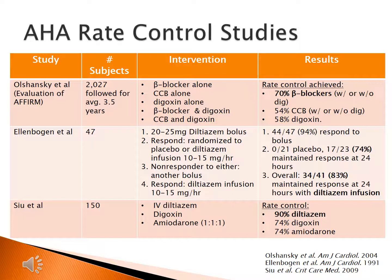In a study by Sue's group, IV diltiazem was compared to digoxin and amiodarone. They found that rate control was better achieved with diltiazem compared to digoxin and amiodarone. Rate control for this study was defined as a ventricular rate of less than 90 beats per minute.